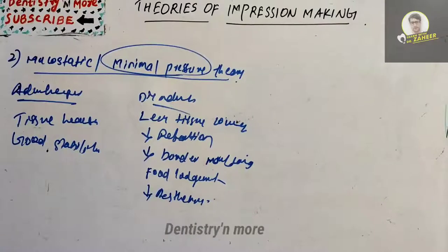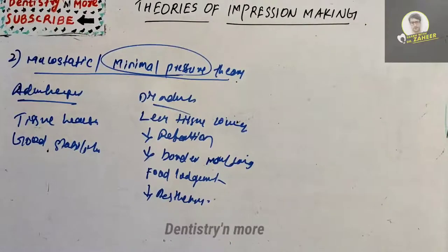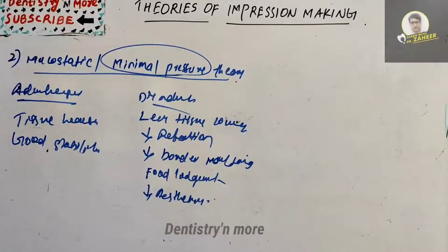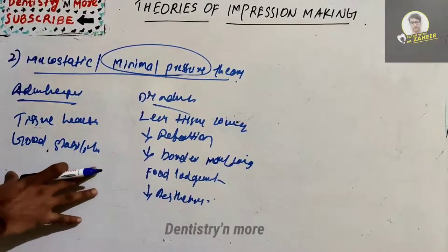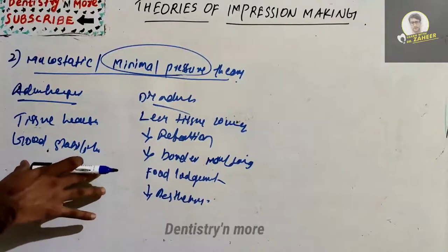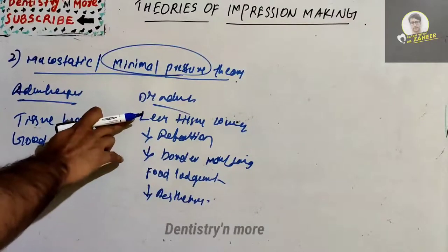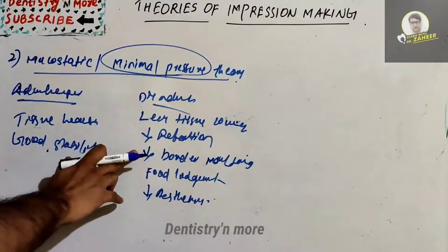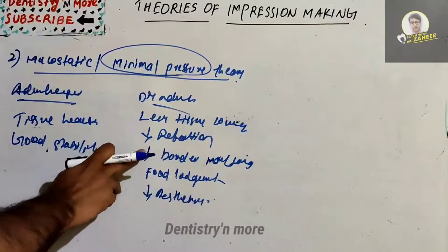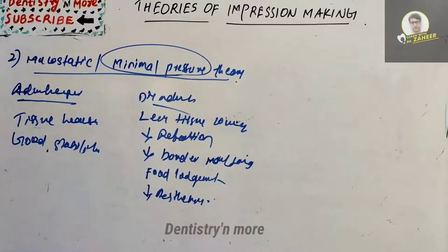Additional disadvantages of the mucostatic technique include compromised aesthetics due to the short denture flanges, and tissue variations at the time of impression making and insertion may affect the results. In summary, this technique based on Pascal's law preserves tissue health and stability but has major drawbacks: less tissue coverage, less retention, no peripheral seal causing food lodgment, and compromised aesthetics.